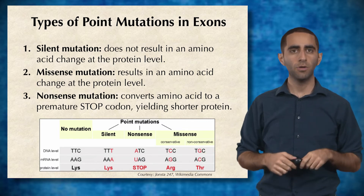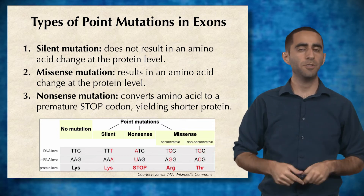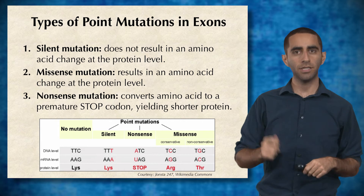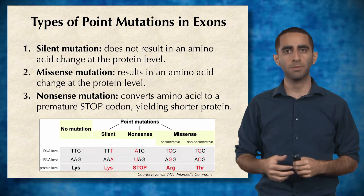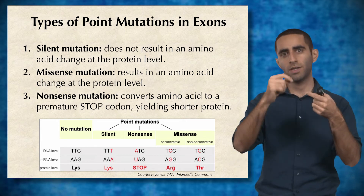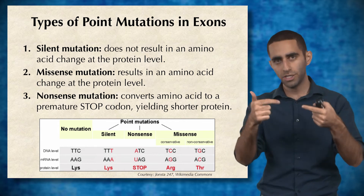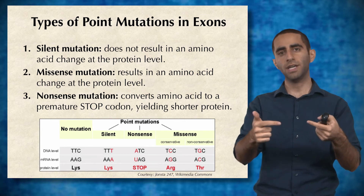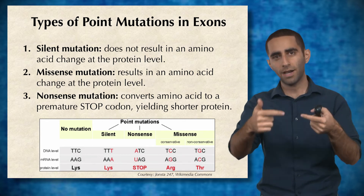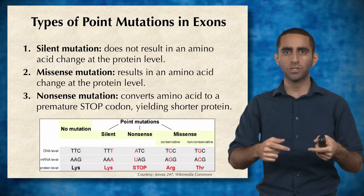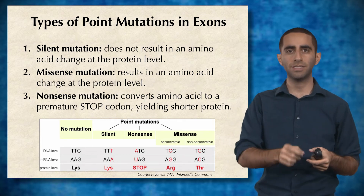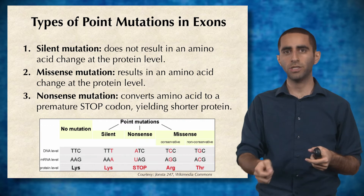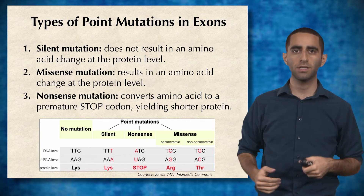You also have a missense mutation, which does result in a change of an amino acid at the protein level. The DNA is mutated, the mutation holds in the RNA, and then the RNA actually results in a different amino acid at a given position in the protein.